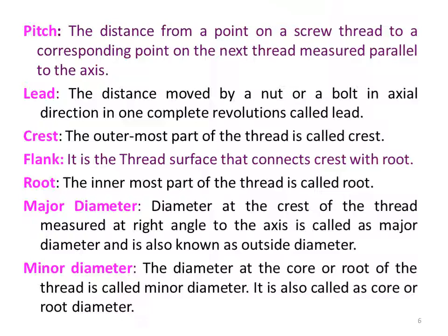What is meant by pitch of a screw thread? The distance from a point on a screw thread to a corresponding point on the next thread, measured parallel to the axis, is called pitch. What is lead? The distance moved by a nut or bolt in the axial direction in one complete revolution is called the lead of a screw thread.